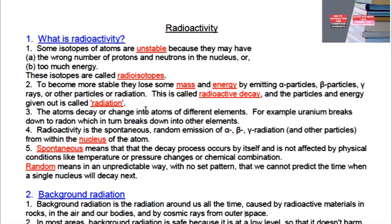To become more stable, radioisotopes tend to lose some mass and energy. Remember Einstein's equation E = mc² shows the interchangeability of energy and mass — mass can be converted into energy and energy into mass. So ΔE = Δm × c². To become more stable they lose some mass and energy, and they do so by emitting alpha particles, beta particles, gamma rays or other particles or radiation.